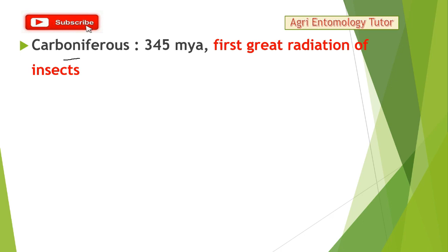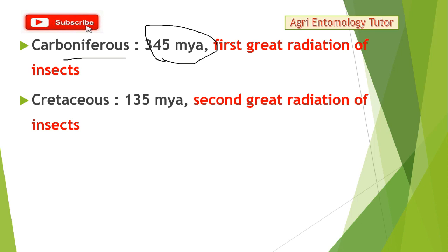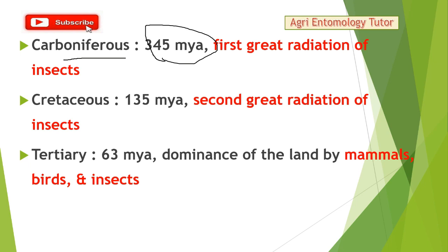In the Carboniferous period, about 345 million years ago, the first great radiation of insects occurred and winged insects appeared. In the Cretaceous period, about 135 million years ago, the second great radiation of insects happened and the wing flexion mechanism arose. In the Tertiary period, about 63 million years ago, the dominance of land by mammals, birds, and insects can be seen.